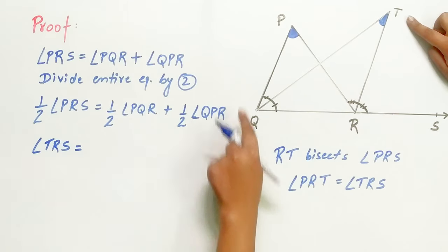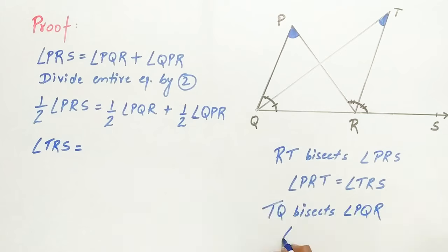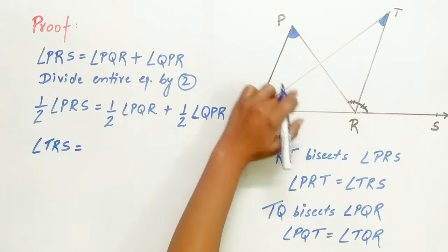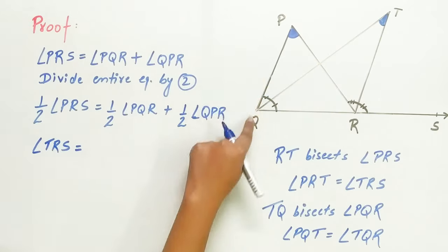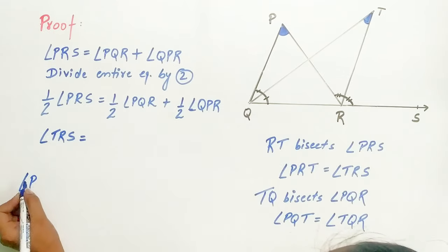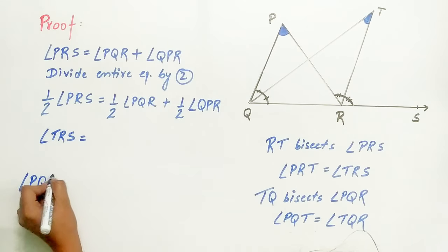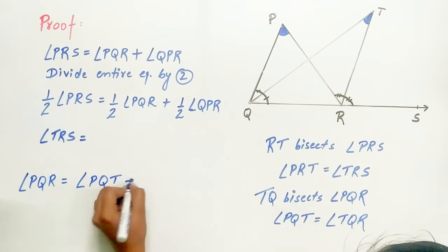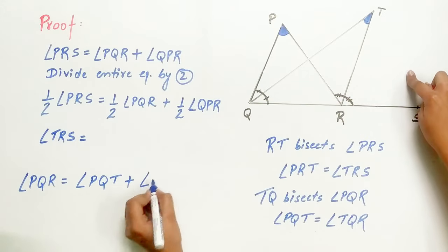TQ also bisects angle PQR. A bisector of an angle divides it into two equal parts. Hence, angle PQT equals angle TQR. Angle PQR equals the sum of angle PQT plus angle TQR.